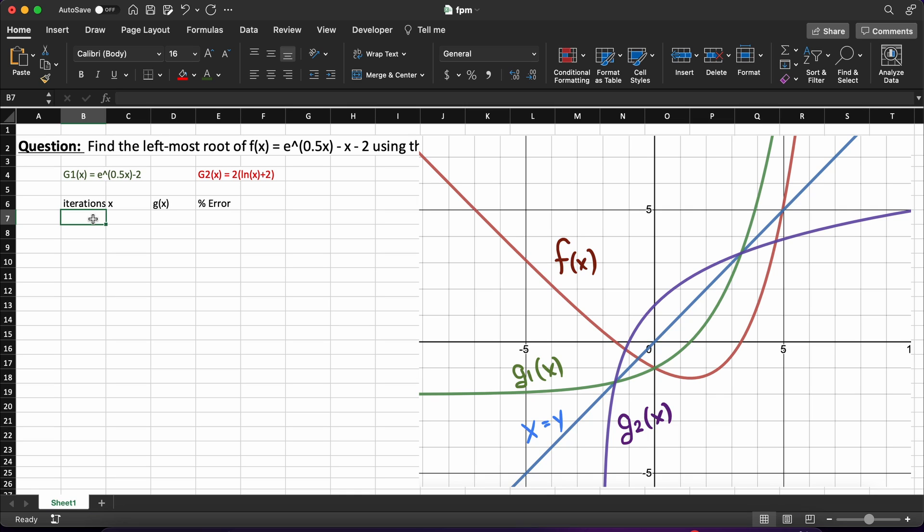Let's firstly add in some numbers for our iteration counter, and enter an initial guess as to where we think our root is located. If you are unsure what to use for an initial guess, I recommend that you check out my video on convergence of the fixed point method, for which I'll leave a link in the description down below. For this problem I'm going to be using 2 as a starting guess.